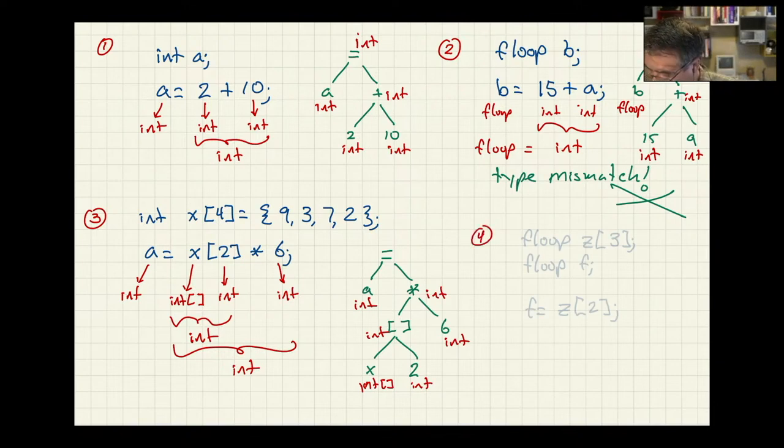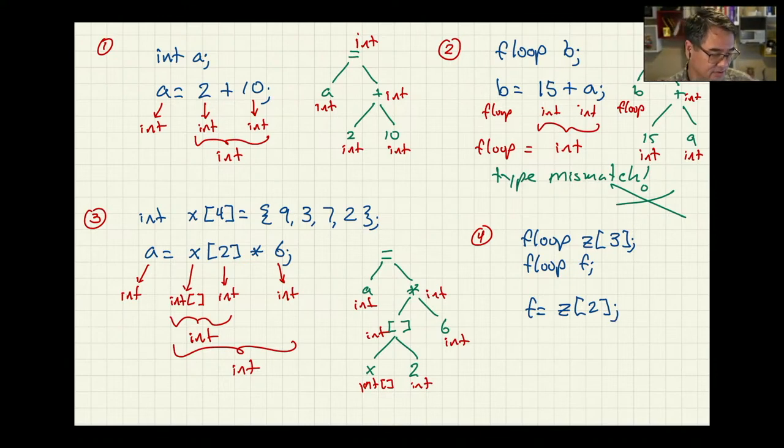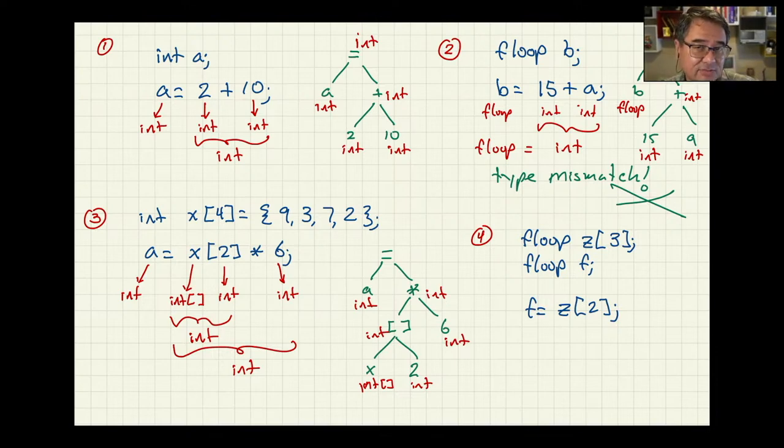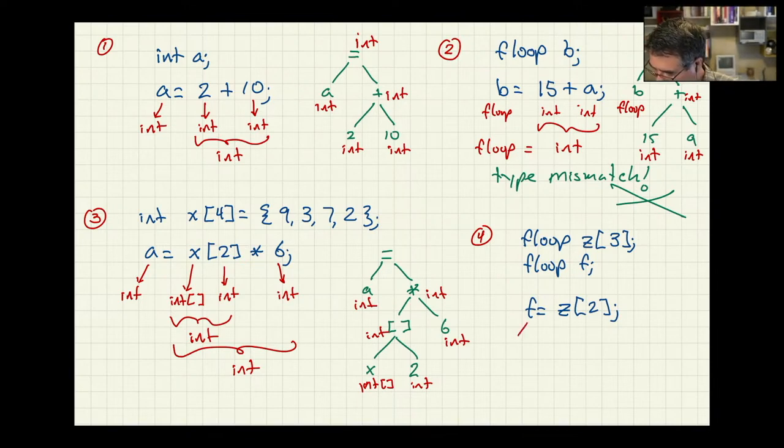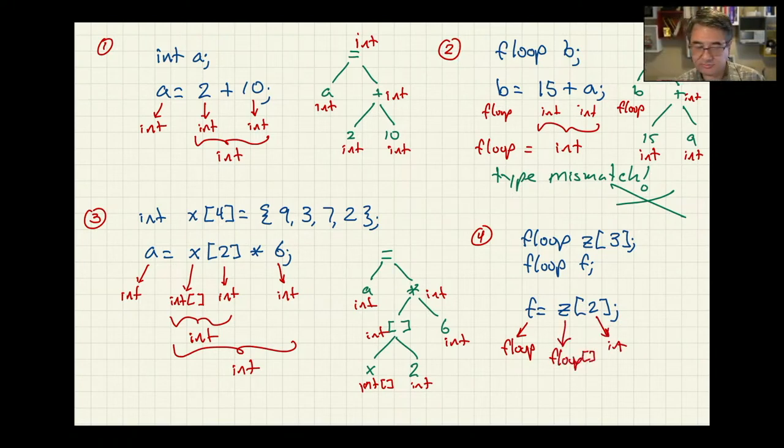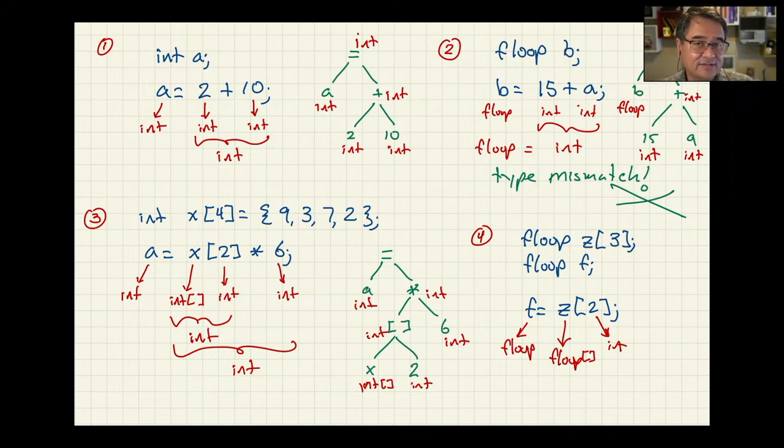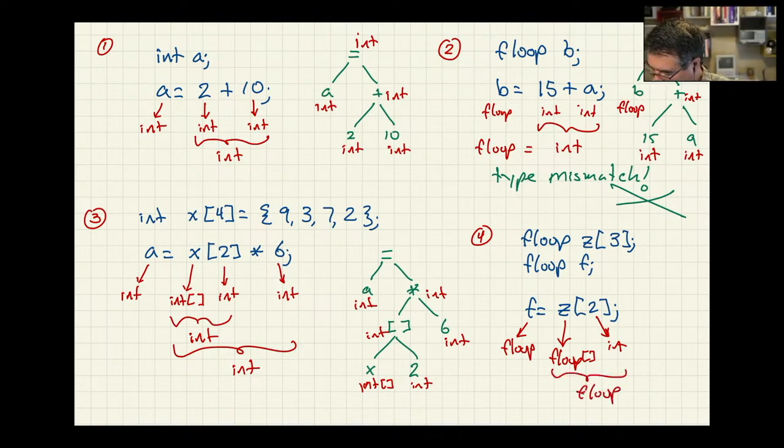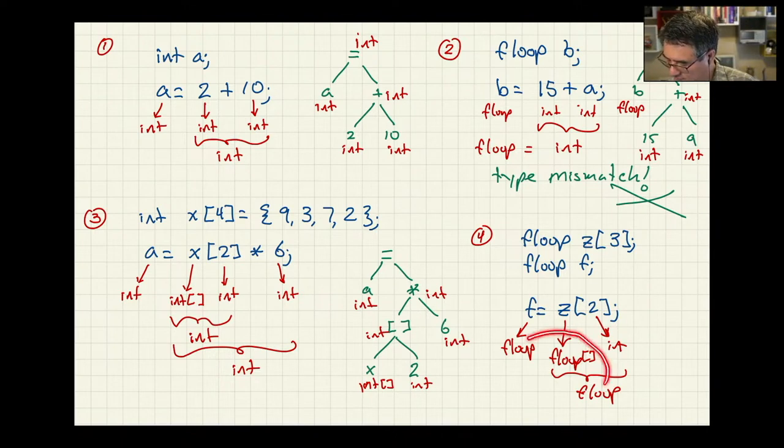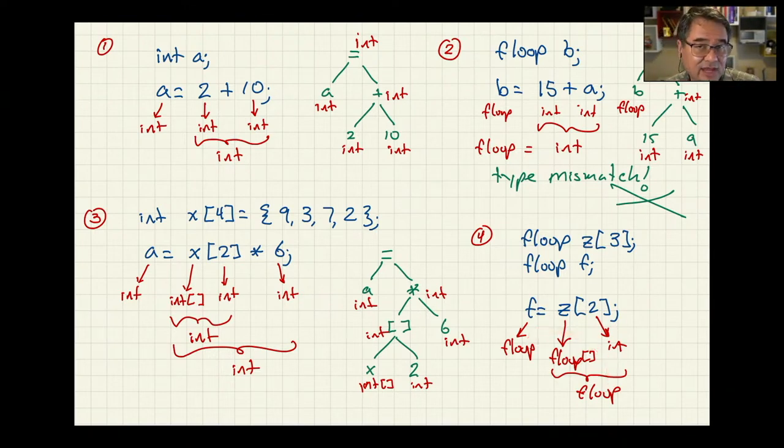Let's do another example. Will this work? F equals z or z bracket 2. Yes. That should compile. It should compile. We don't necessarily know what a floop is, but at least it should pass all the checks. Okay. So we know that f is a floop. We know that 2 is an int. And we know that z or z is a floop array. So can we apply the brackets operator to z and 2? Well, yes, that'll work as long as the thing in front of the brackets is an array and the thing inside the brackets is an integer. So the result of this is going to be a floop. And we are trying to assign a floop into a floop. And that works. The types match. And so this is going to work.